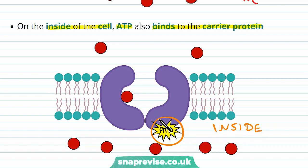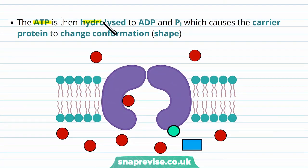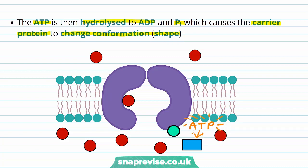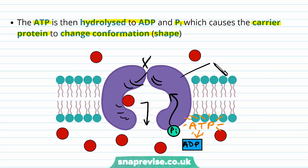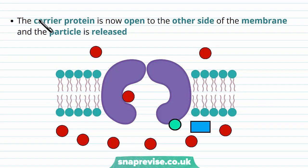ATP binds to the carrier protein. The ATP gets hydrolyzed to ADP and a phosphate group, and this releases energy. The energy is then used to move the carrier protein into a different conformation or shape. The original ATP has been hydrolyzed to release energy, and the products are ADP and phosphate (Pi). That energy is used to change the protein's shape so that one end is now closed and the other end is exposed to the particle. At this point the carrier protein is open to the other side of the membrane and closed to the previous side, and the particle simply gets released.